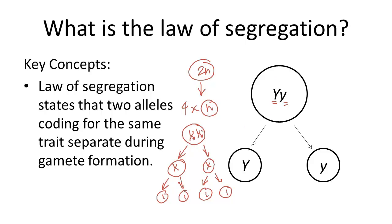And so when these homologous chromosomes separate into their separate gametes, one gamete will end up with the yellow allele and the other one will end up with the green allele.